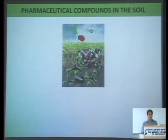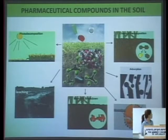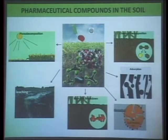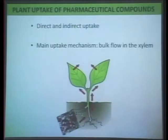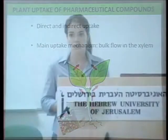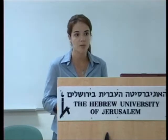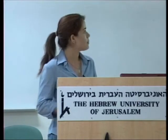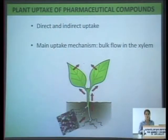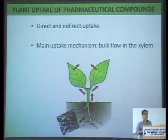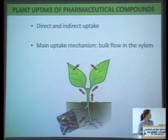When you irrigate with water that contains pharmaceuticals, the pharmaceutical in the soil may undergo photo decomposition, may leach to groundwater, may break down by chemical and microbial action, or may be absorbed to soil particles — all depending on the physicochemical properties of the specific pharmaceutical. When the pharmaceutical is present in the soil solution, it may be directly or indirectly taken up by the plant to meet its evapotranspiration and photosynthetic requirements. The main uptake mechanism is by bulk flow in the xylem through the roots, and plant characteristics such as root morphology and lipid content of the leaves also determine the extent of pharmaceutical uptake.